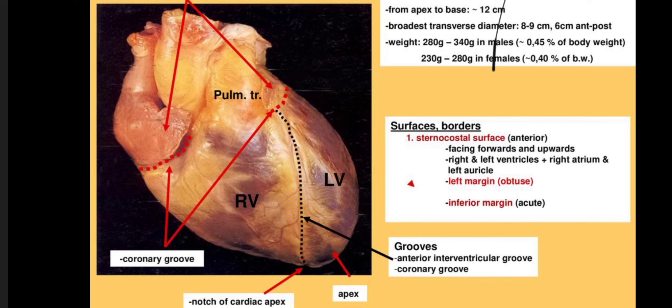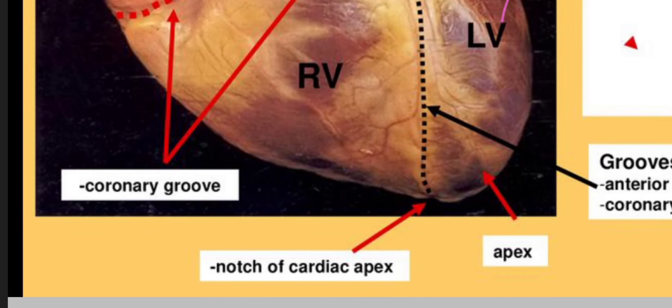So incisura apices cordis is the notch of the apex of the heart. It is also called the notch of the apex, which you can see in the diagram — here we have the notch of the apex.